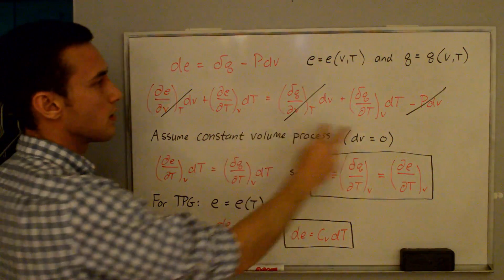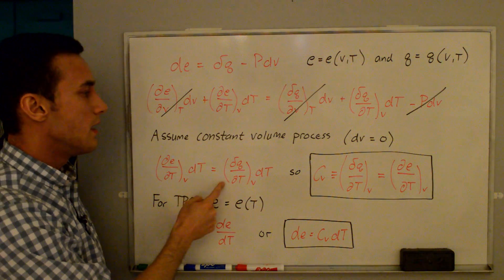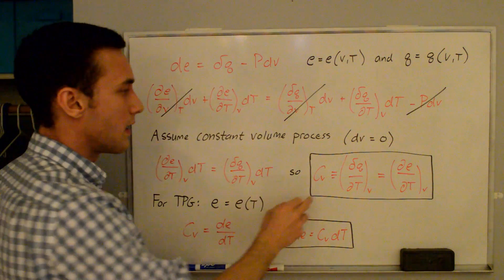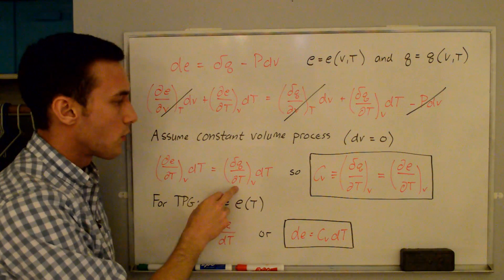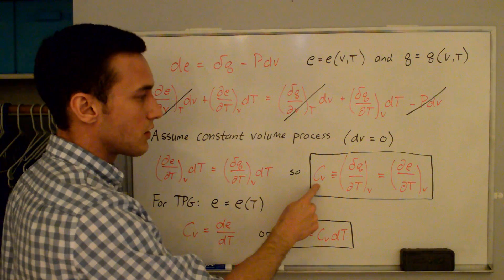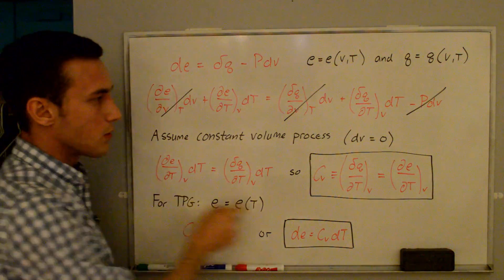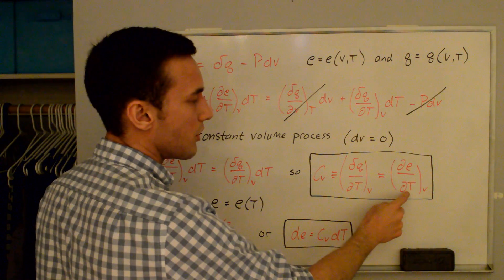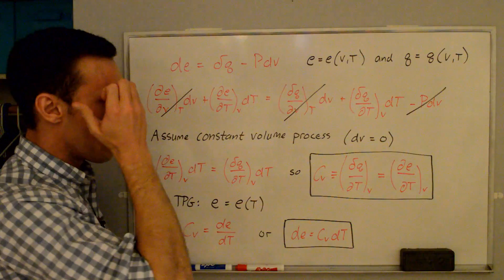We're left with just two terms: dE/dT at constant V times dT equals dq/dT at constant V times dT. This dq/dT term has been specified for a constant volume process, which is the definition of our specific heat at constant volume cv. This means that cv is equal to the change in energy with the change in temperature at constant volume.